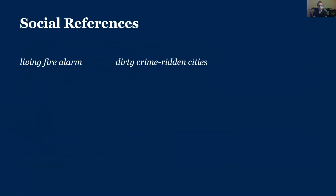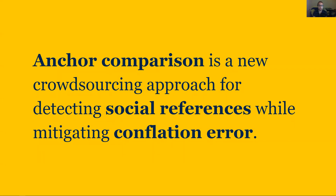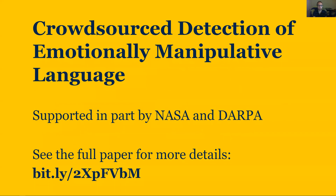Other examples would be terms such as 'dirty crime-ridden cities,' which has the literal meaning of dirty streets and alleyways as well as racial connotations, and 'migrant caravans,' which has the meaning of a line of cars as well as Middle Eastern connotations. In general, social references refer to language that invokes connotations by overlaying parts of social and cultural contexts, and this is what anchor comparison was meant to solve. Today I've told you about a new crowdsourcing approach called anchor comparison — the first crowdsourcing approach that can detect social references while mitigating conflation error. Thank you so much for your attention, and I encourage you to see the full paper for more details.